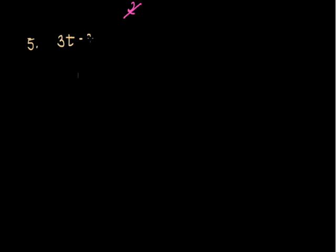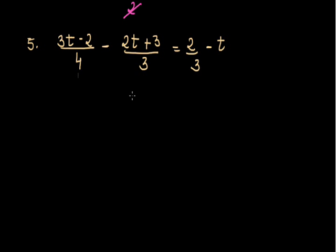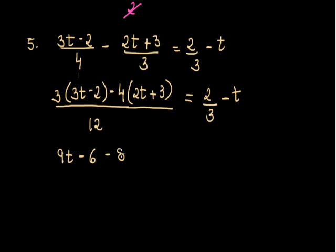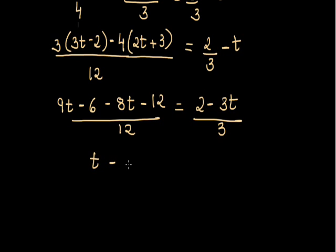The fifth question: 3t minus (t minus 2) upon 4 minus (2t plus 3) upon 3 is equal to 2 upon 3 minus t. I have to get the value of t. First I will solve the left hand side by taking out the LCM. The LCM of 4 and 3 is 12, giving 3 into (3t minus 2) minus 4 into (2t plus 3) upon 12, equal to 2 upon 3 minus t. Taking the LCM on the right hand side also gives 2 minus 3t upon 3. Opening the bracket: 9t minus 6 minus 8t minus 12 upon 12 equals 2 minus 3t upon 3. So t minus 18 upon 12 is equal to 2 minus 3t upon 3.